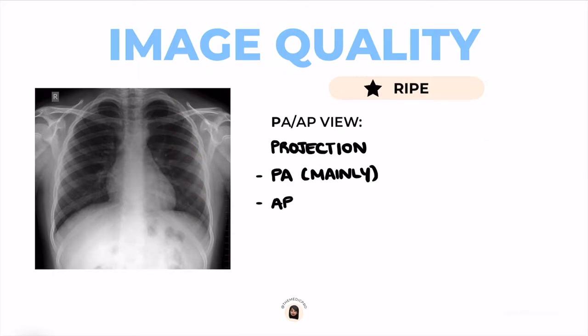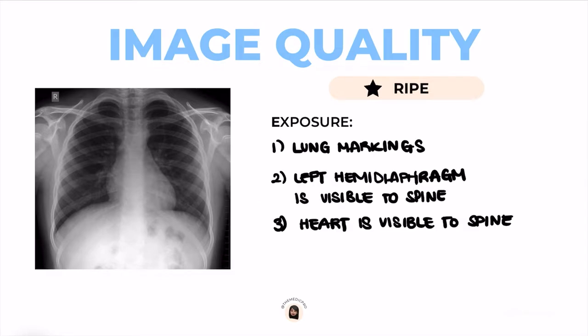P stands for projection — that means whether the x-ray is taken AP, which is anterior-posterior, or PA, posterior-anterior view. Most x-rays are usually PA, and they're written on the x-ray film itself. E finally stands for exposure, and you do this in three ways: check if you can see lung markings across the entire x-ray film, check whether the left hemidiaphragm is visible to the spine, and check whether the spine is seen behind the heart.